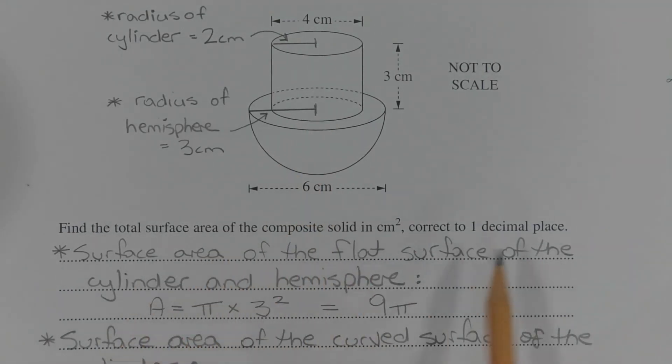So the surface area of the flat surface of the cylinder and hemisphere is given by the formula for the area of a circle with radius 3 cm. That's area equals π times 3 squared, which equals 9π. I'm going to leave these subtotals in exact form for now and then round at the very end.